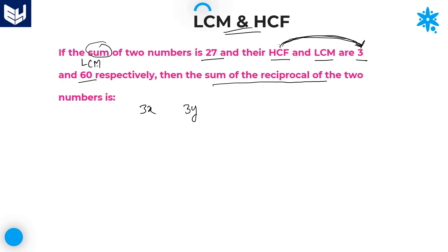According to the problem, the sum of the two numbers is 27. So 3x + 3y = 27. Taking 3 common, x + y = 27/3, which gives x + y = 9.